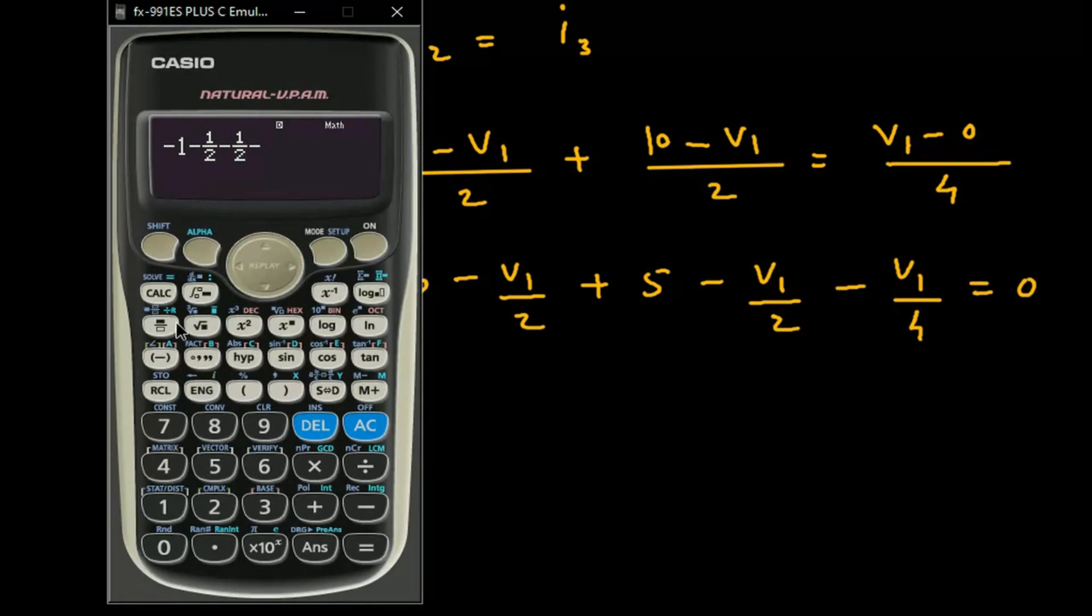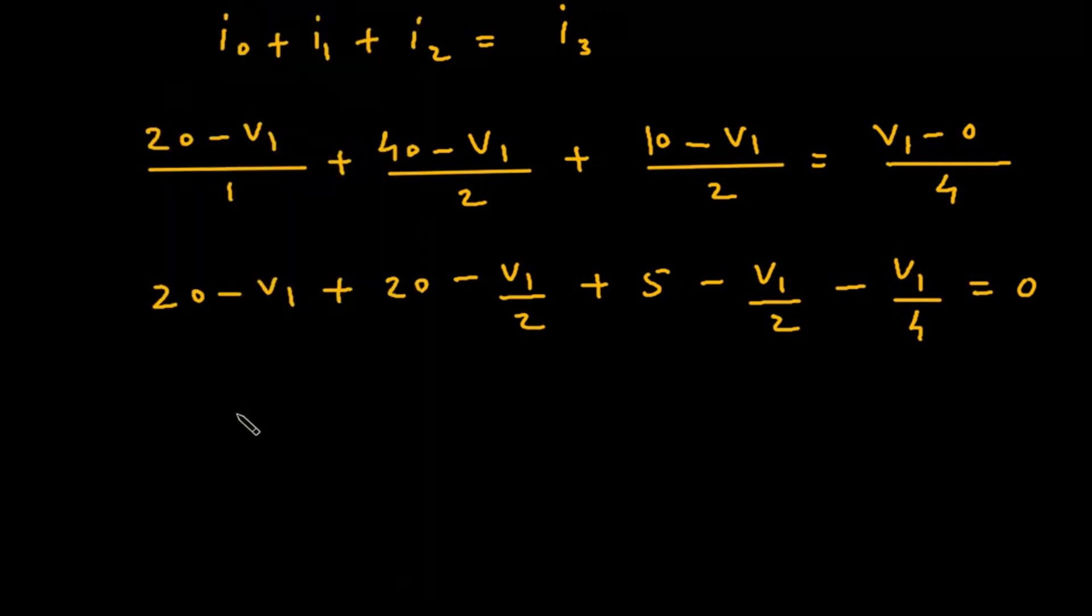Collecting V₁ terms: -9/4 V₁, and constants: 20 + 20 + 5 = 45. So -9/4 V₁ + 45 = 0.